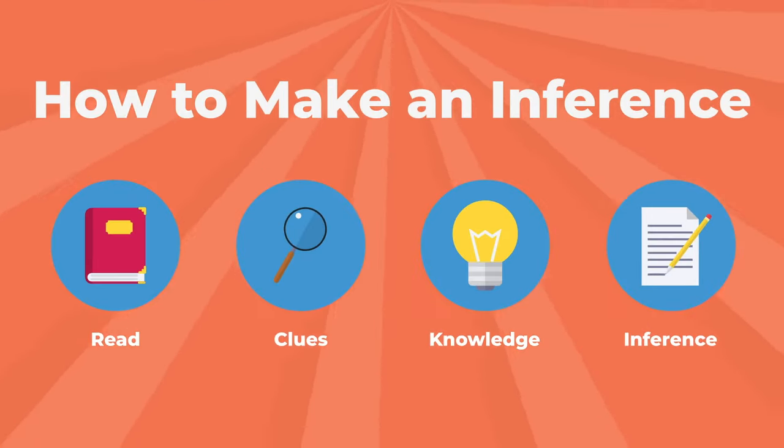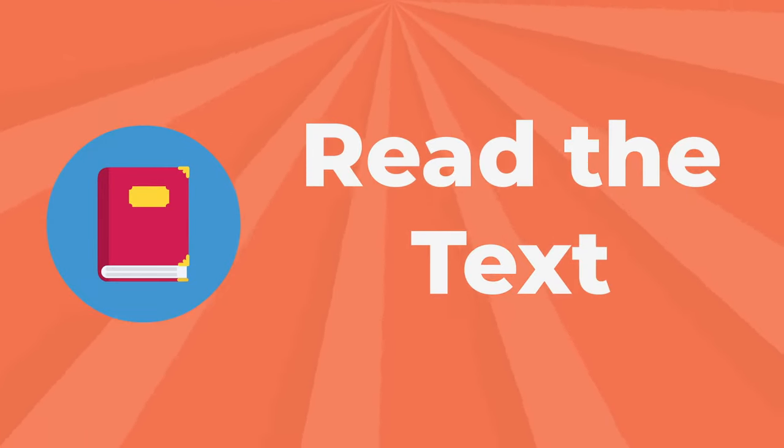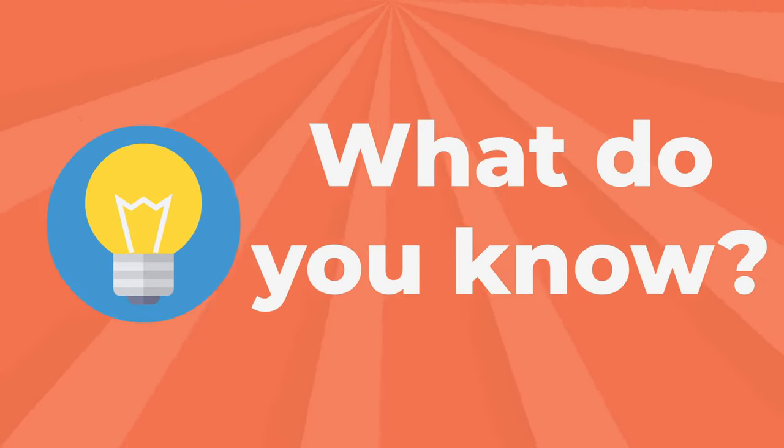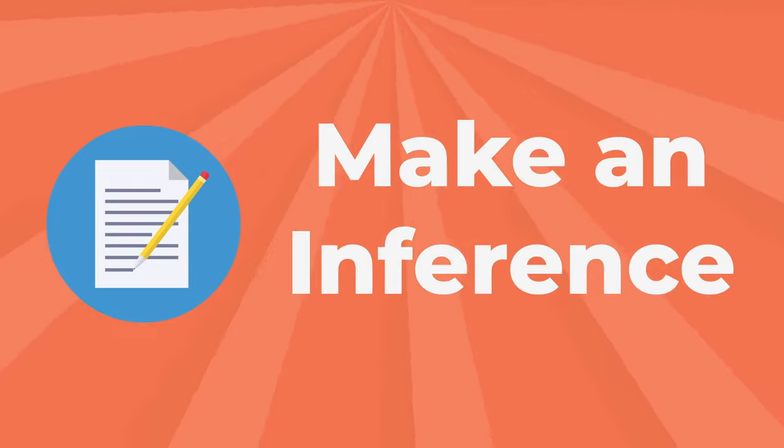Now, here's a process of inferencing. One, read the story or article. Two, stop and write down the clues or observations that you see in the reading. Three, stop and write down what you already know. Four, make an inference.